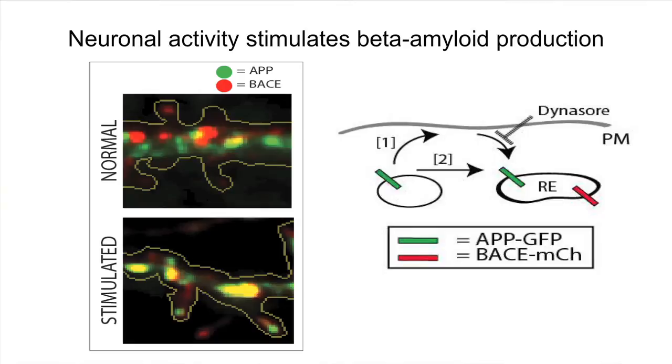Next, we looked at post-mortem brains from patients with Alzheimer's disease compared to controls. So remarkably, we found that while the distribution of APP and BACE was separate in normal brains, there was a convergence in brains of patients with Alzheimer's disease, suggesting that the basic concept of physical separation and convergence likely plays a role in human disease as well.